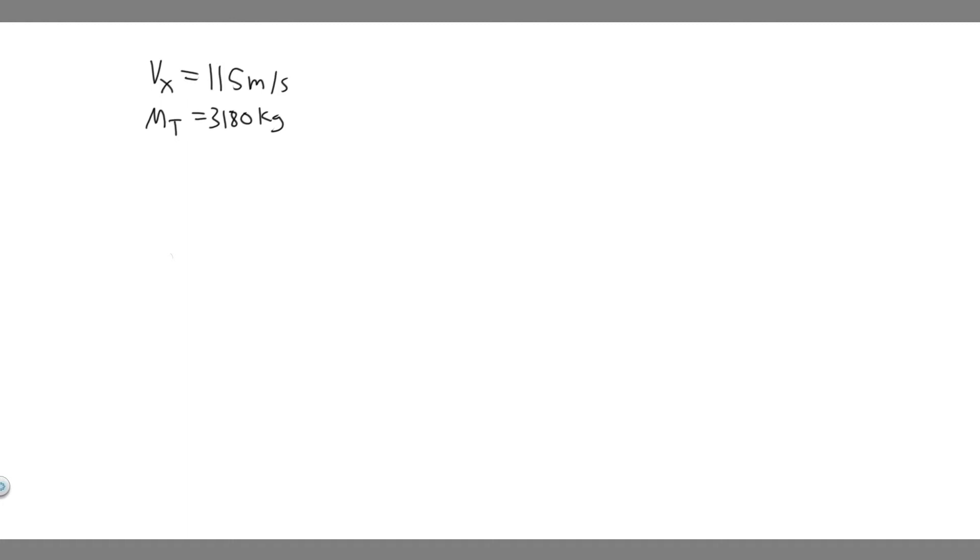So in order to solve this problem, what we're going to do is use the conservation of momentum. But before we do that, let's just explain what we were given. We're given that it's going to be traveling at 115 meters per second, and I'm going to call this the velocity in the x direction. So you want to imagine this is traveling along an axis. And we're also given the total mass of 3,180 kilograms.